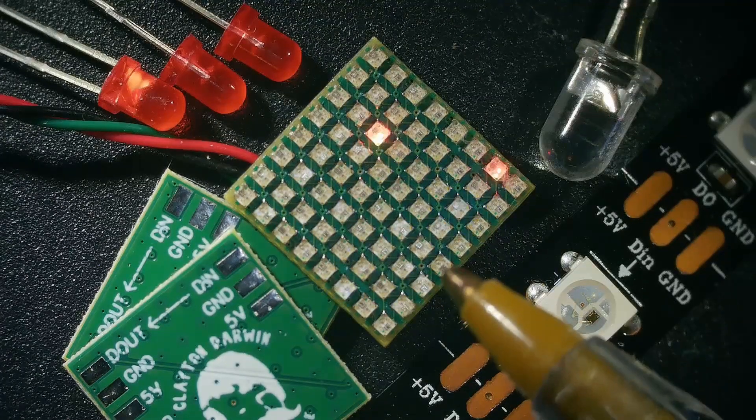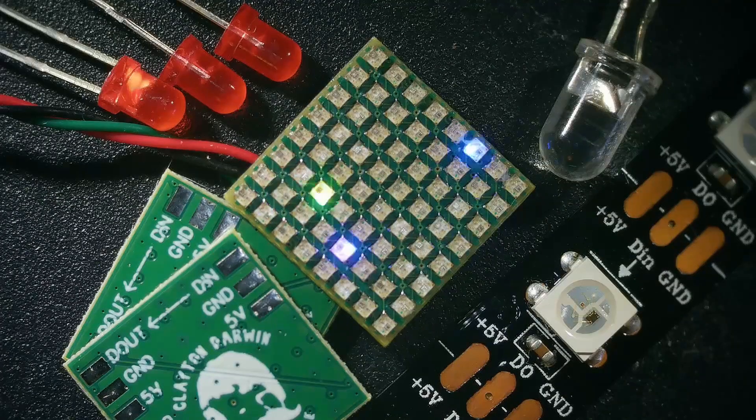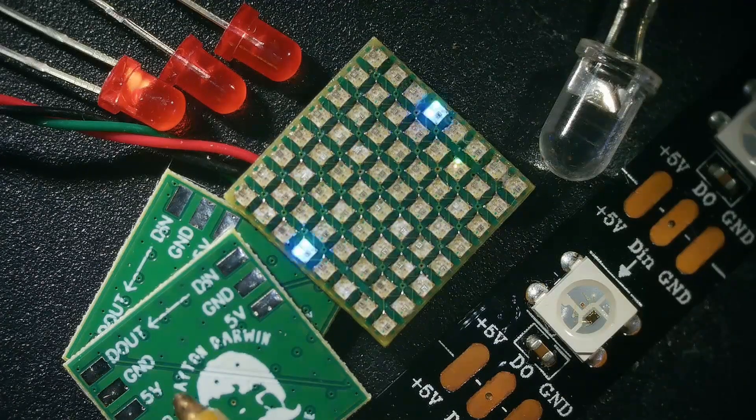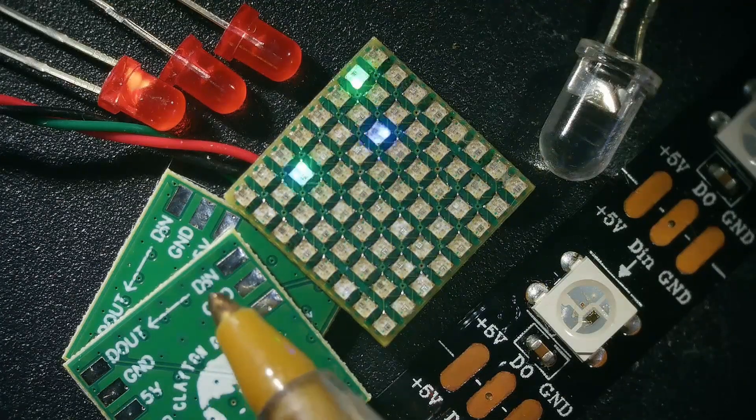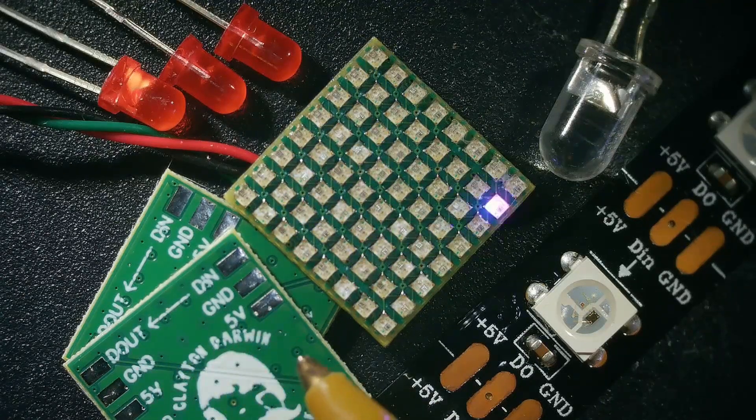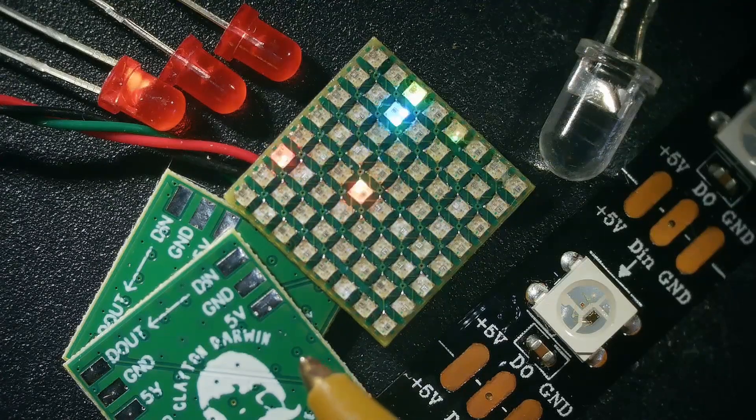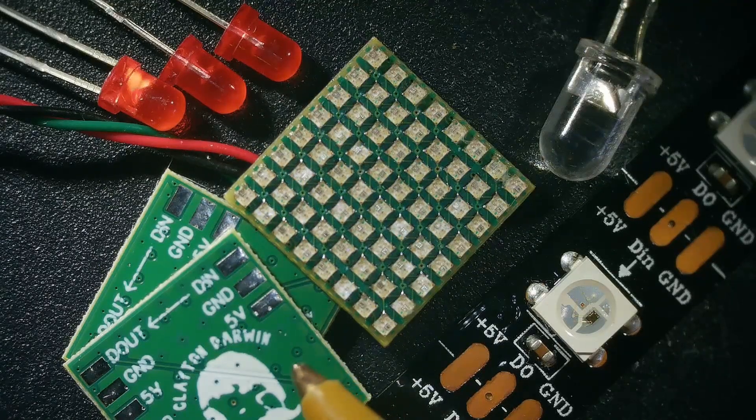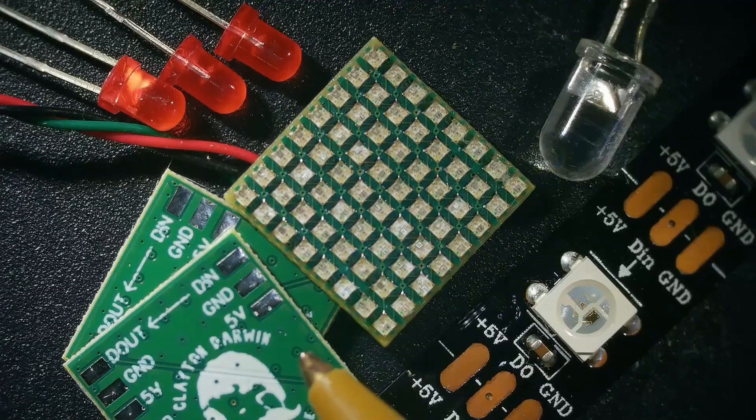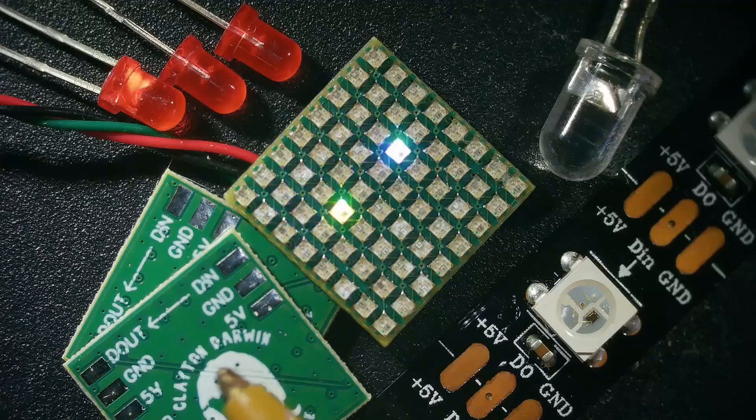This is what the back of the board looks like. You can see it's pretty amazing they can do the silk screen this small. I had to use the smallest size vias that JLCPCB would allow for standard boards, so I shrunk those down, but it turned out pretty good.